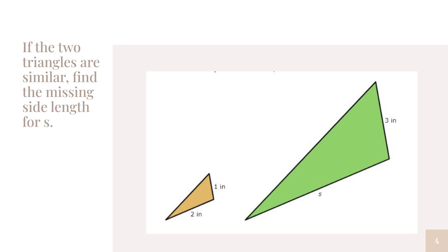If we are given the problem shown, it says that the two triangles are similar. Find the missing side length for S. S would correspond with 2, and 1 would correspond with 3.